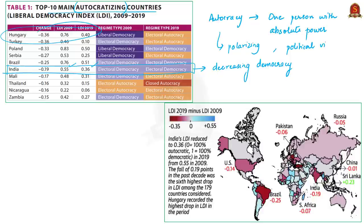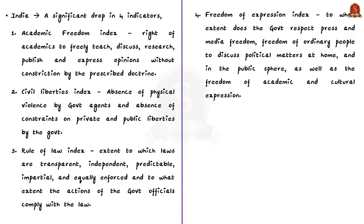With respect to India, there has been a significant drop in four indicators: the academic freedom index, civil liberties index, rule of law index, and freedom of expression index.